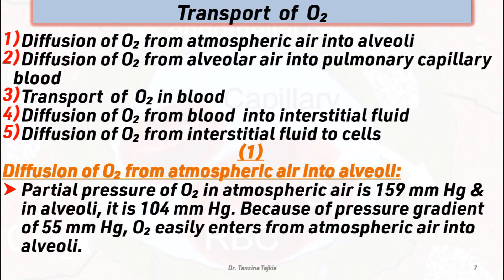First, diffusion of oxygen from atmospheric air into the alveoli. The partial pressure of oxygen in atmospheric air is about 159 mmHg, and in alveoli it is about 104 mmHg. Because of a pressure gradient of 55 mmHg, oxygen easily enters from atmospheric air into the alveoli.